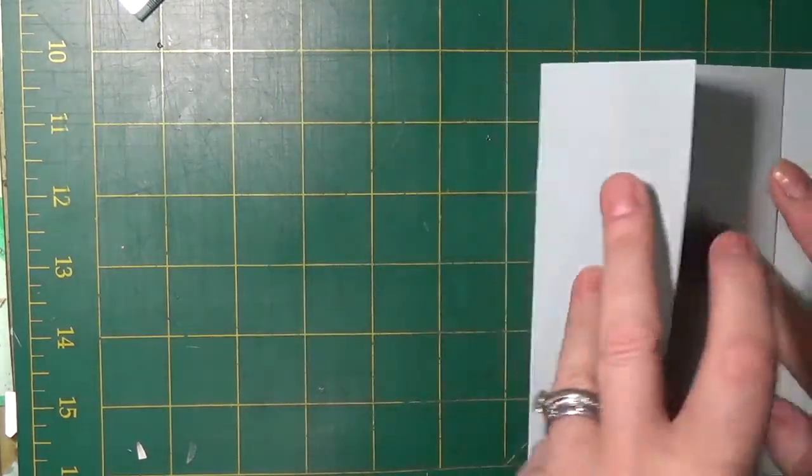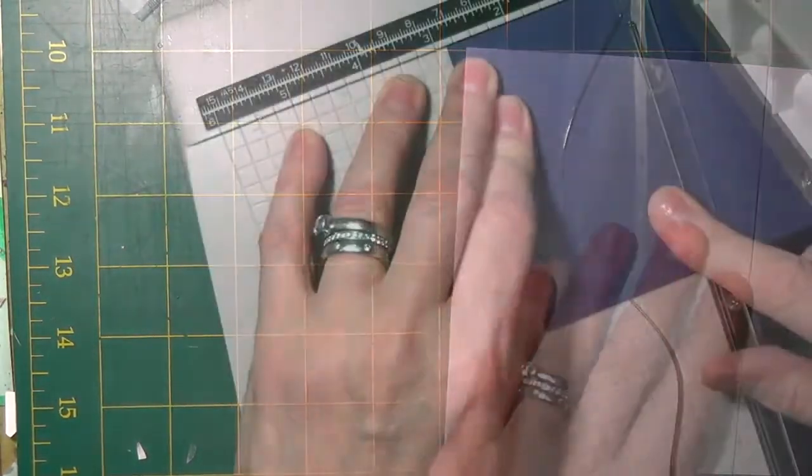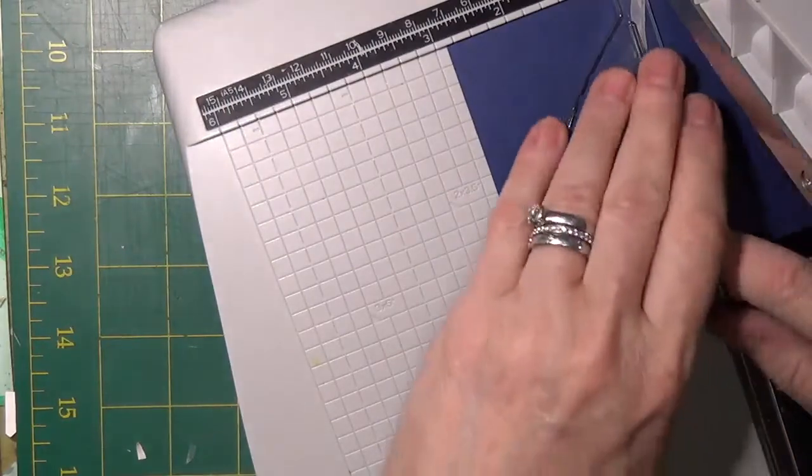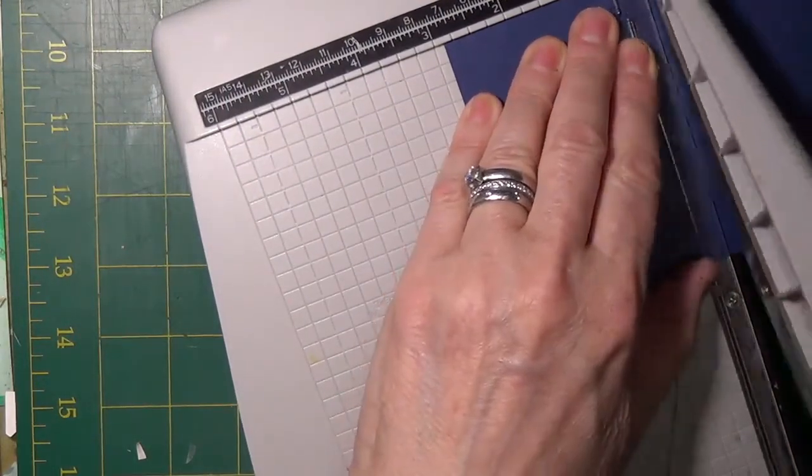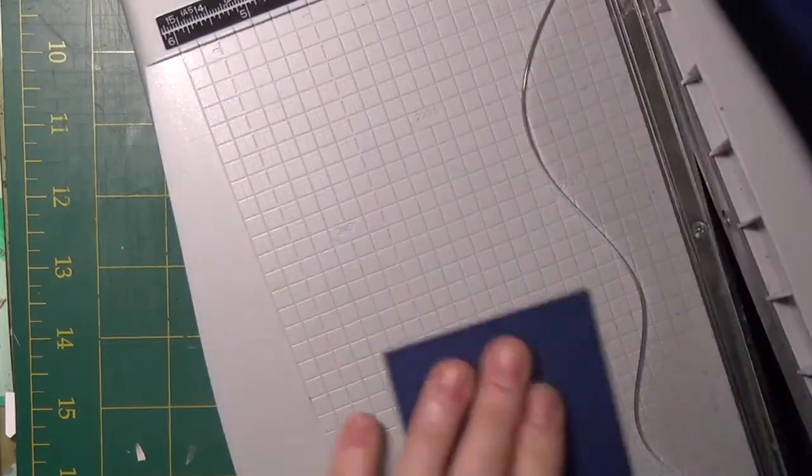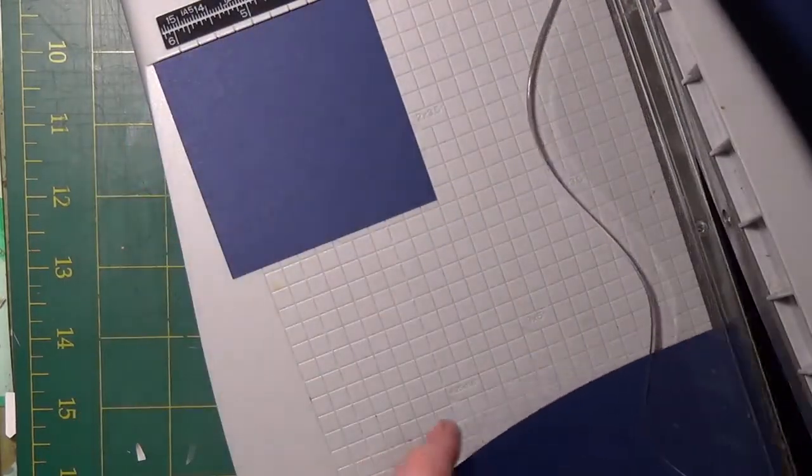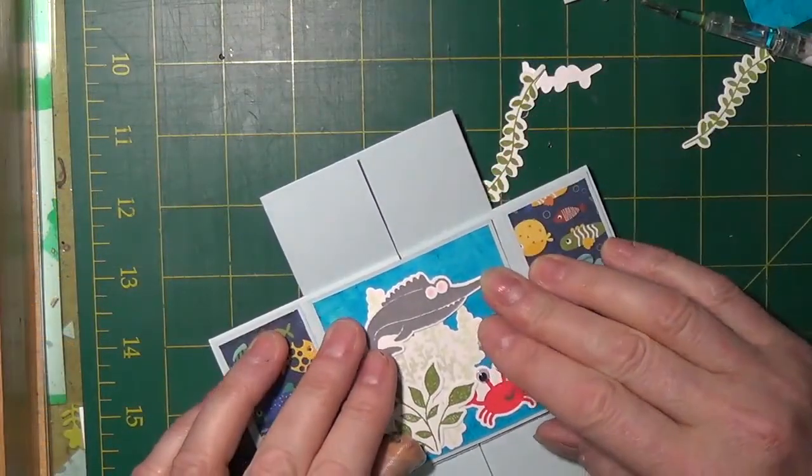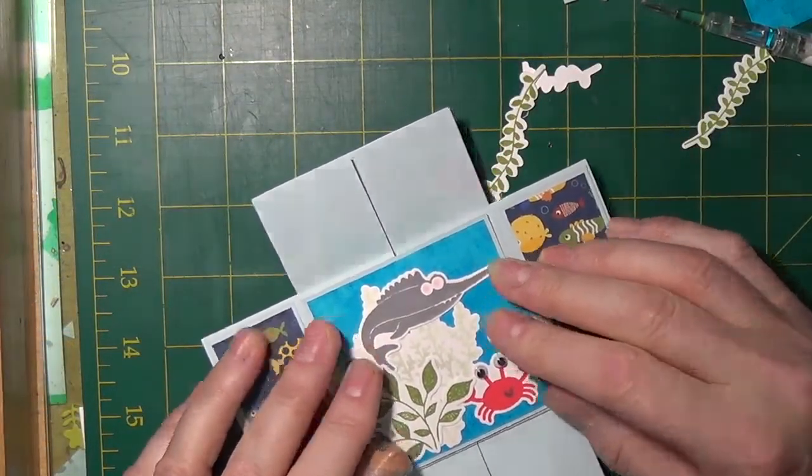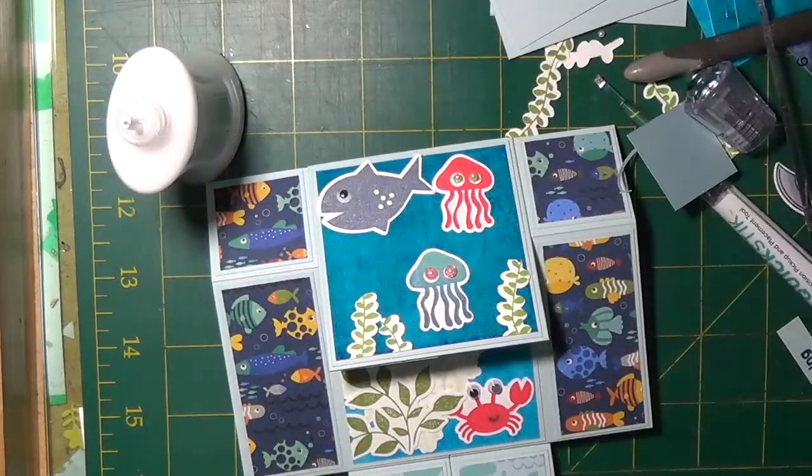This type of card all of the imagery will face one way so you don't have to move the card every which direction so that everything is upright. Then you're going to decide if you want mats and those numbers are in the description below to the blog.